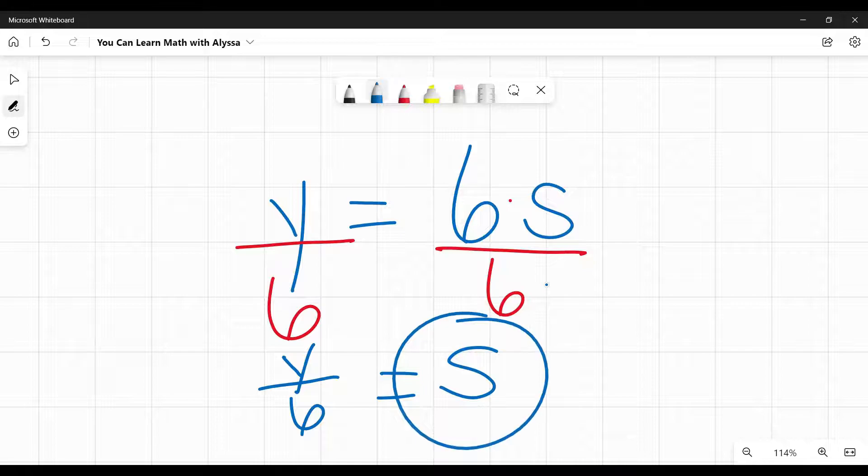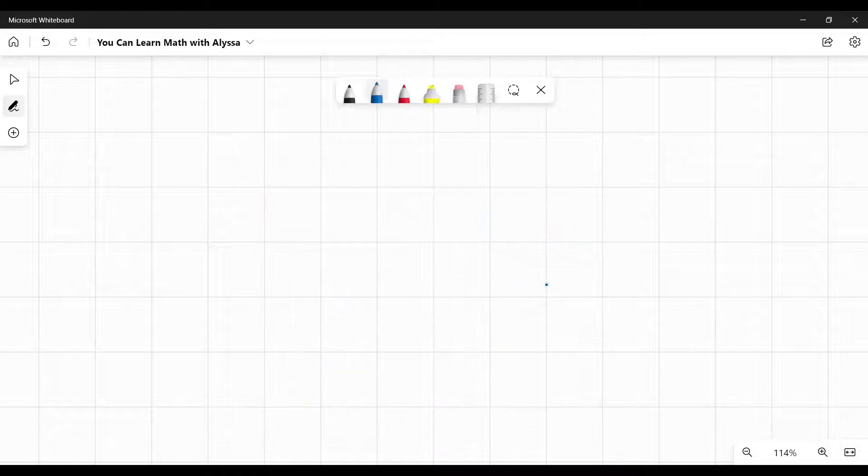And that's it. I've solved for s. S is by itself over here. Everything else is over on the left. And that's the goal. That's what we're wanting.